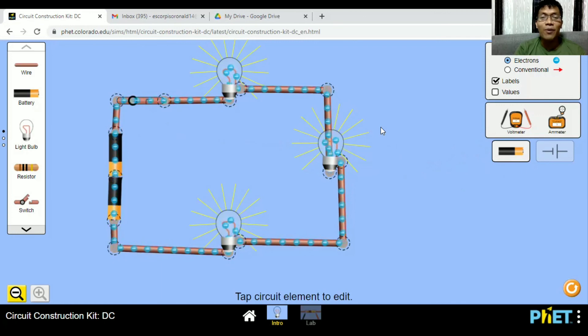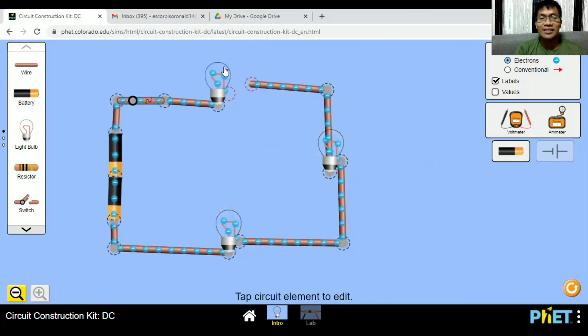What if one of the bulbs malfunctioned? Let's cut it, and let's observe what will happen. See? When one bulb doesn't work, then the rest of the bulbs will no longer work. Remember, we only have a single pathway of charges. Therefore, when one is cut, the rest will be affected. And that is one of the disadvantages of a series circuit.